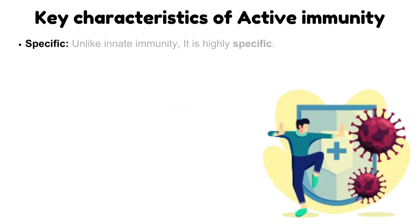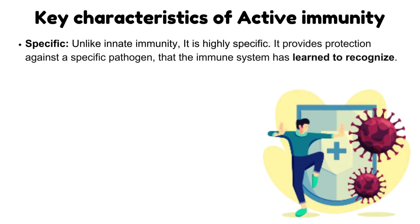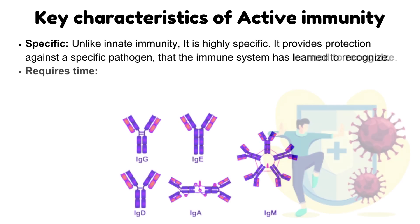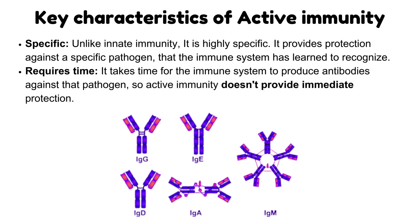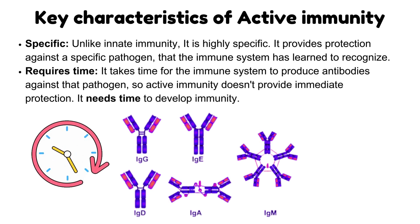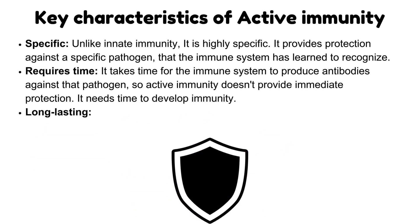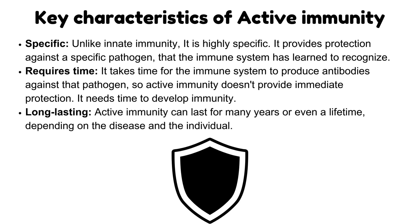Key characteristics of active immunity: Specific — unlike innate immunity, it is highly specific, providing protection against a specific pathogen that the immune system has learned to recognize. Requires time — it takes time for the immune system to produce antibodies, so active immunity doesn't provide immediate protection; it needs time to develop. Long-lasting — active immunity can last for many years or even a lifetime, depending on the disease and the individual.